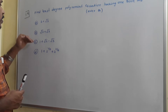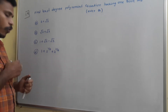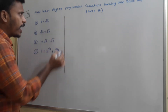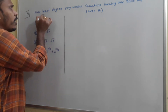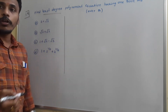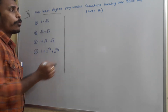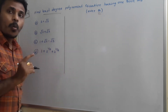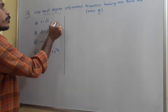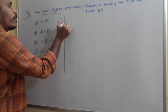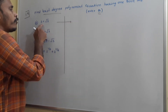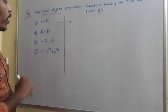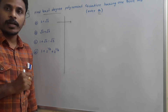We need to solve options A, B, C, D one by one. For the first problem, we need to find the least degree polynomial over rational numbers, and one root is given. For the first problem, if one root is 2 plus root 3, I am going to find the least degree polynomial over rationals.